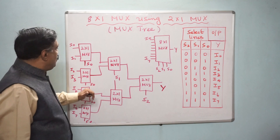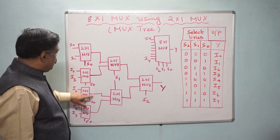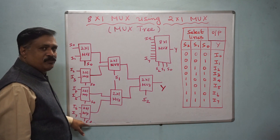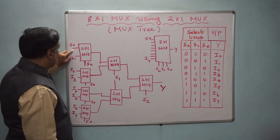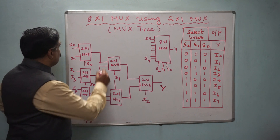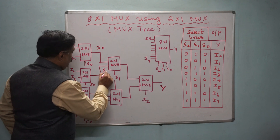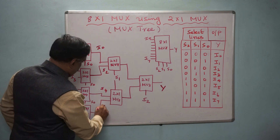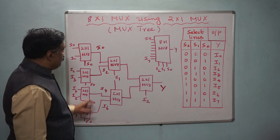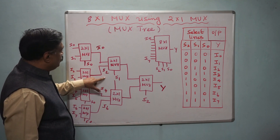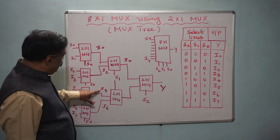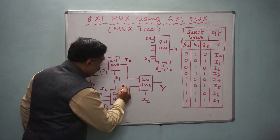Let us check how this works. If you give S0=0, S1=0, S2=0 — all zeros — the first input of each first-level MUX is selected: i0, i2, i4, i6. Then with S1=0 at the second level, i0 is selected from {i0, i2} and i4 is selected from {i4, i6}. Finally with S2=0 at the top MUX, i0 is selected. So when all select lines are 0, i0 is the output.